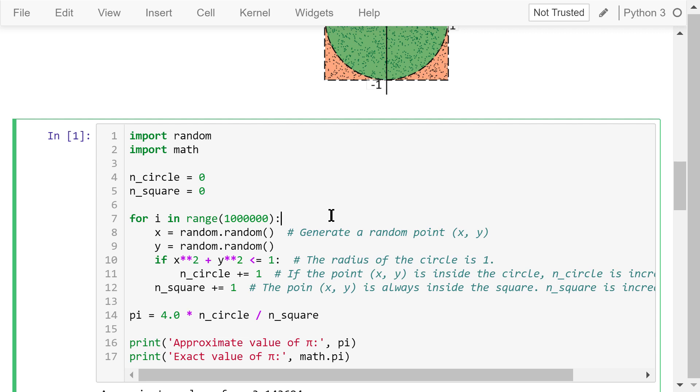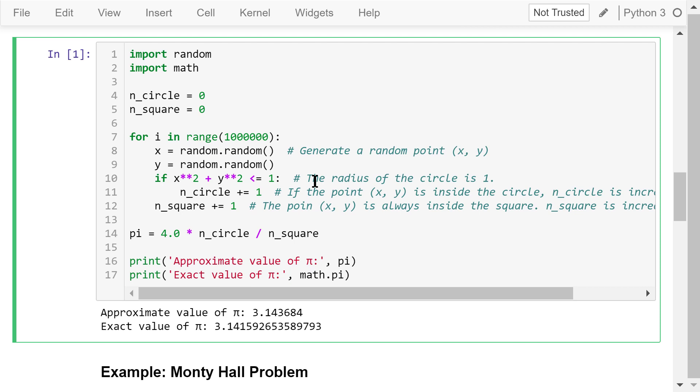We use this for loop to simulate this for 1 million times. For each iteration, we generate 1 dot in the square of the size 1 by 1. If 1 dot is located within the circle with the radius 1, then n_circle is increased by 1. Every dot is within the square, so n_square is increased by 1.